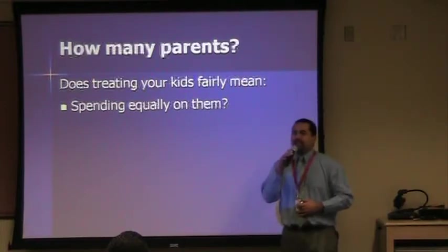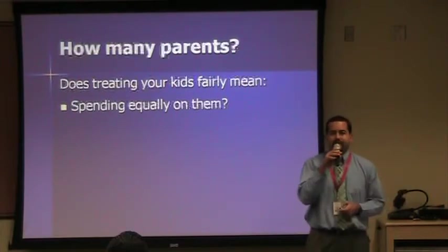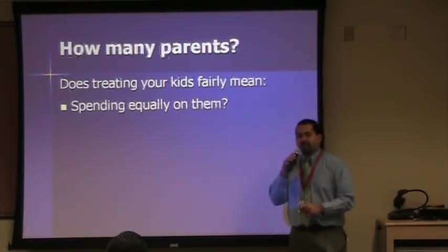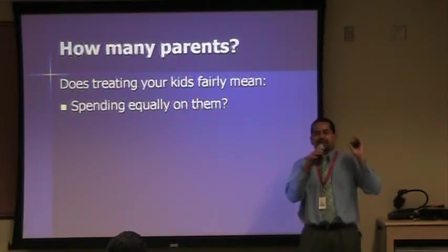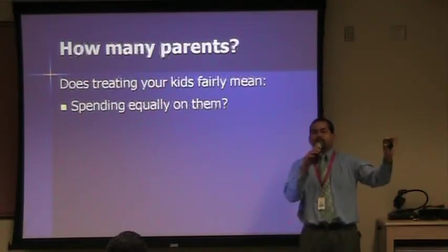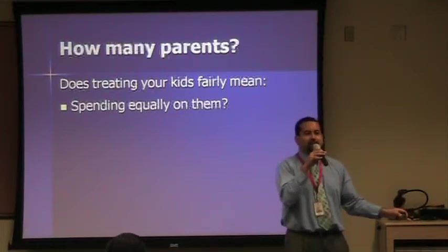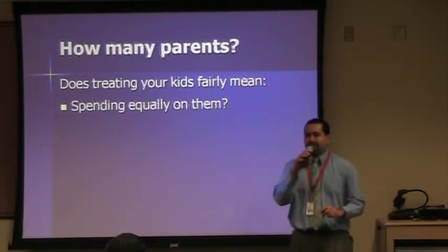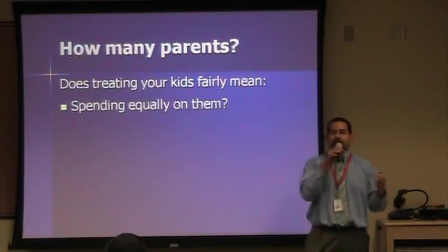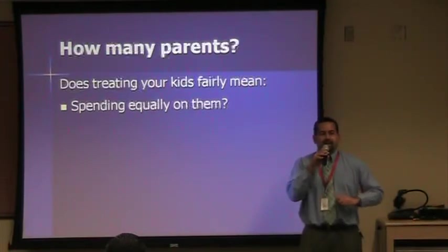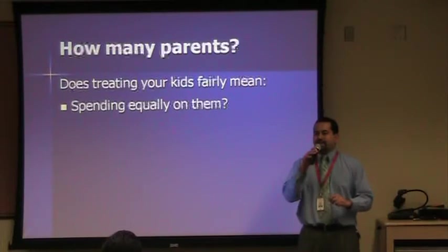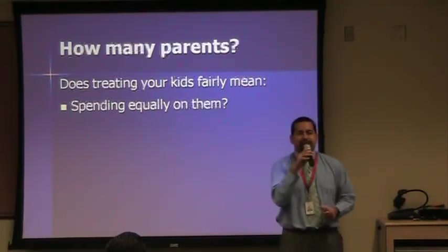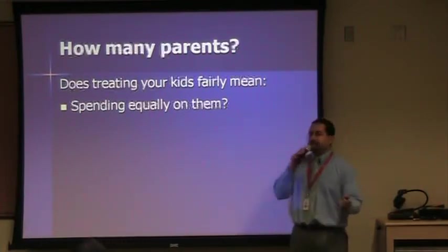Does being fair mean you spend equally on them? With my 15, 12, 3, and 2-year-olds, if I took them all clothes shopping, should I spend $100 on each? For my 3- and 2-year-olds, $100 is way more than enough. But for my 15-year-old, he might come back with a pair of Nikes and that's pretty much his whole budget. So being fair isn't necessarily spending the same amount on all of them. Similarly, if I took them to McDonald's and spent $3 on a Happy Meal for my little ones, my 15-year-old would laugh and ask why I'm giving him a snack for dinner.